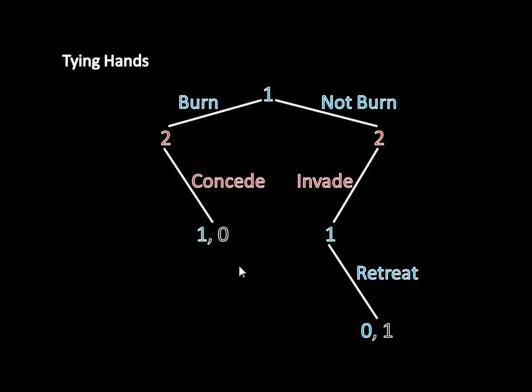And so the last thing we have to do is just check to see what Country 1 wants to do at the beginning of the game. It can either burn the bridge and get one, or not burn the bridge and get zero. Well, because one is greater than zero, that means Country 1 will want to burn the bridge at the beginning of the game.